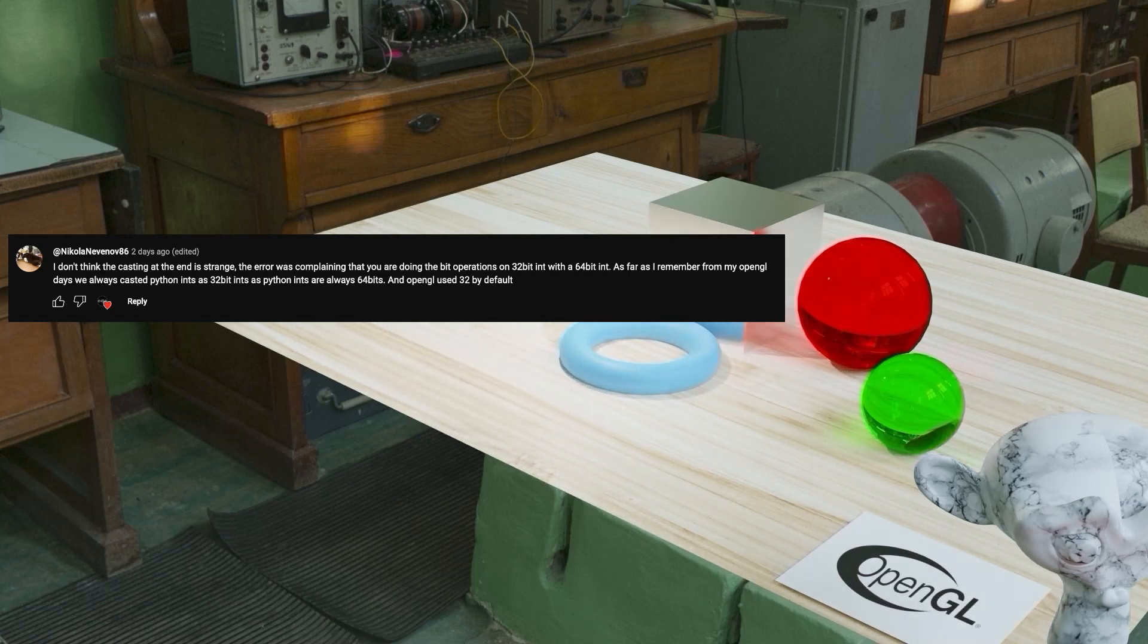I don't think the casting at the end is strange. The error was complaining that you are doing the bit operations on 32-bit int with the 64-bit int. As far as I remember from my OpenGL days, we always casted Python ints as 32-bit ints, as Python ints are always 64 bits, and OpenGL uses 32 by default.